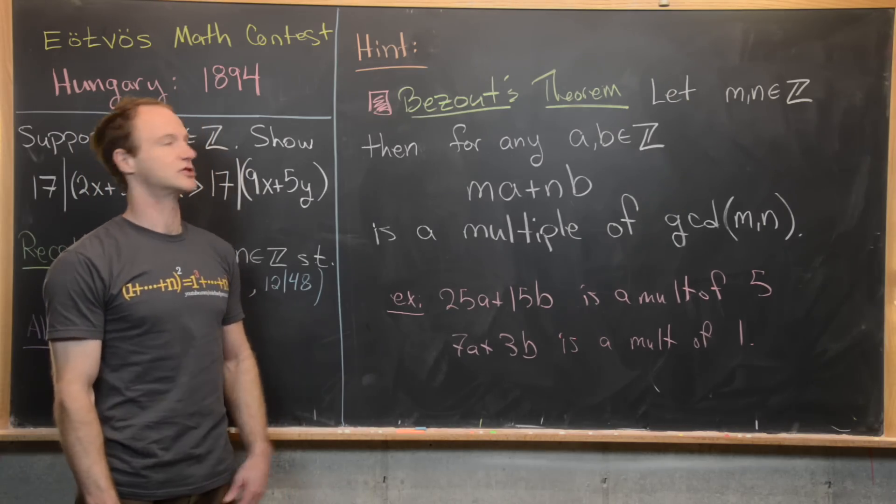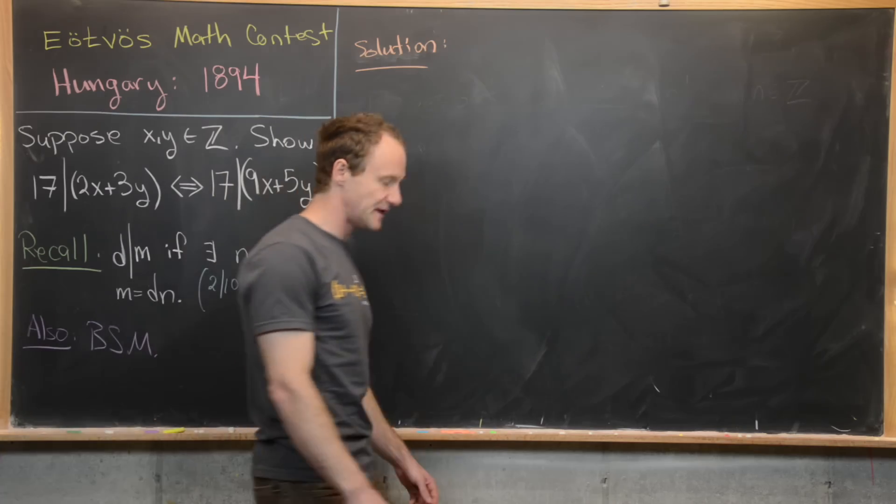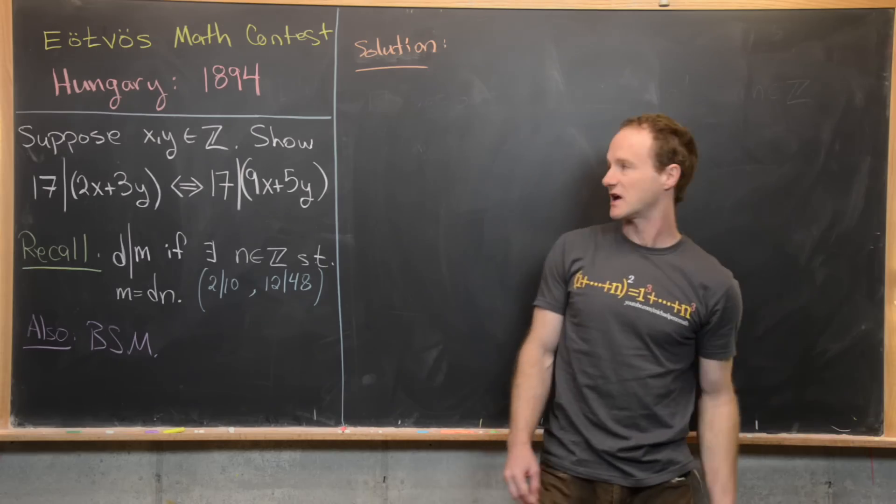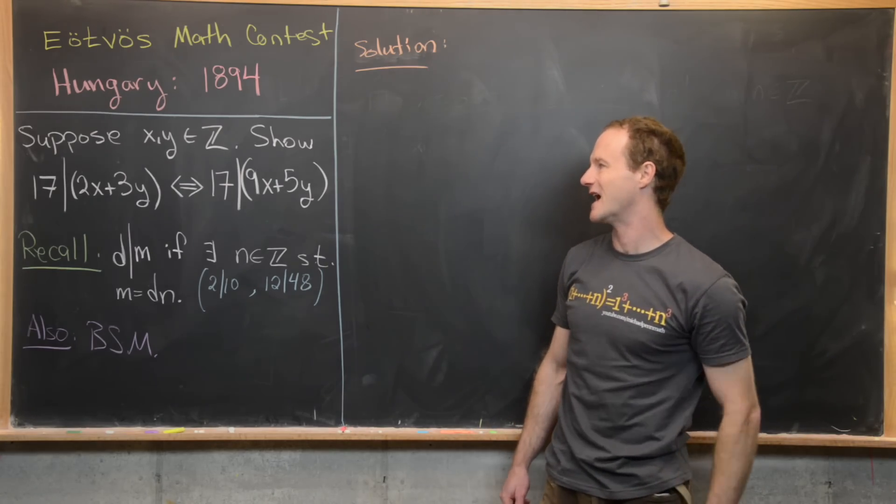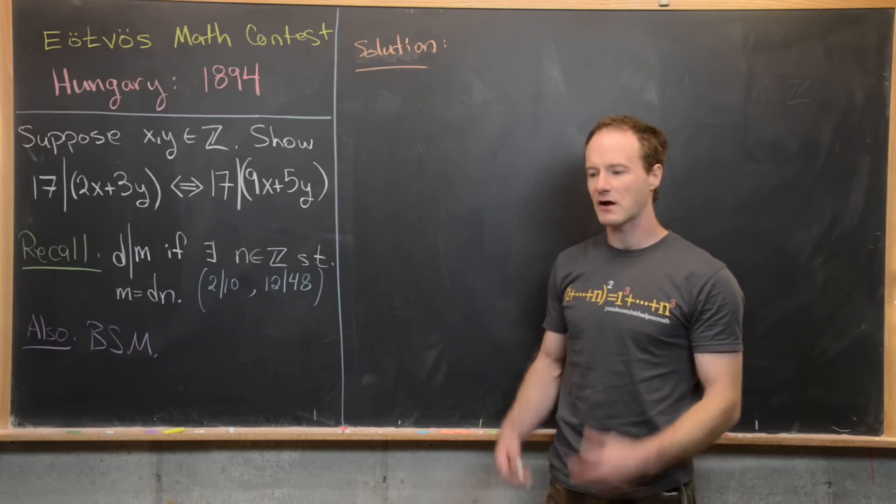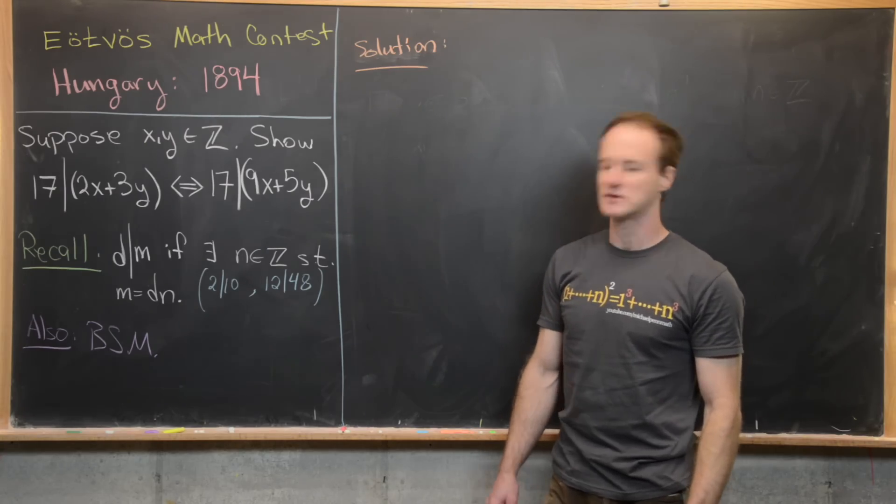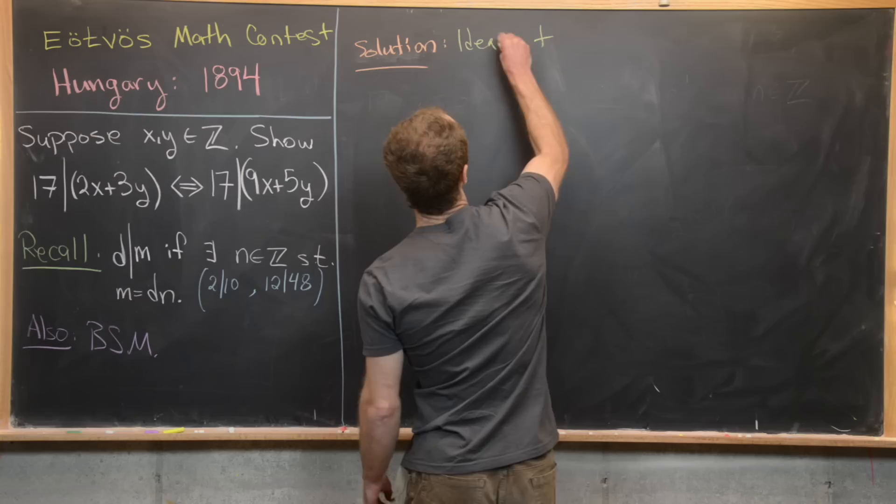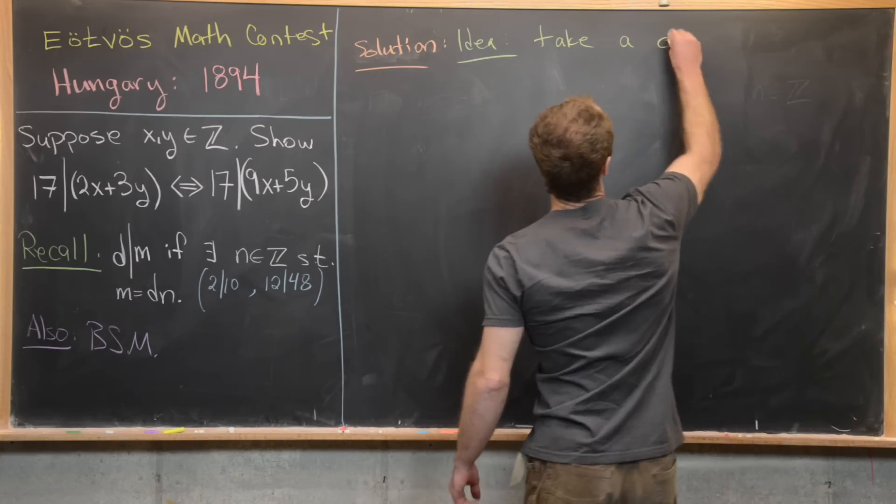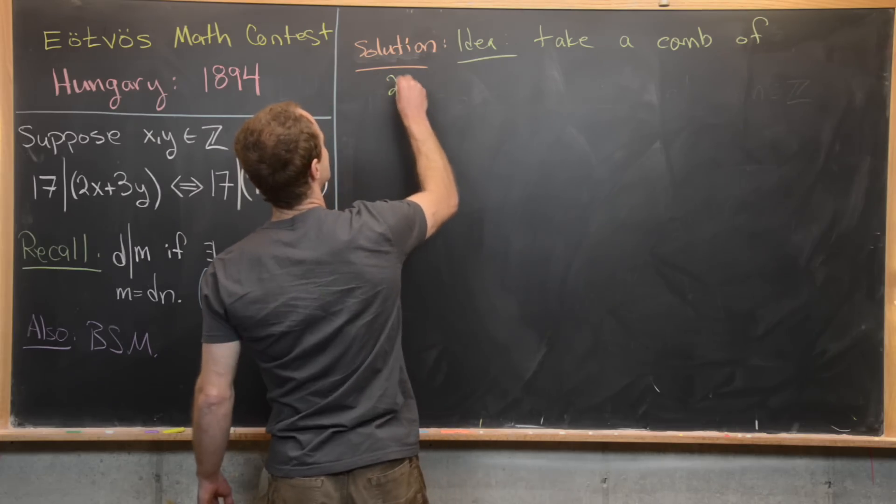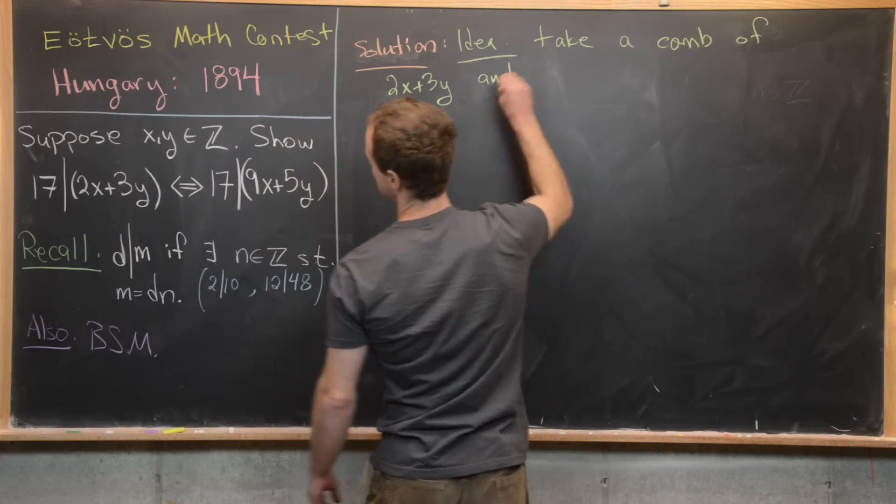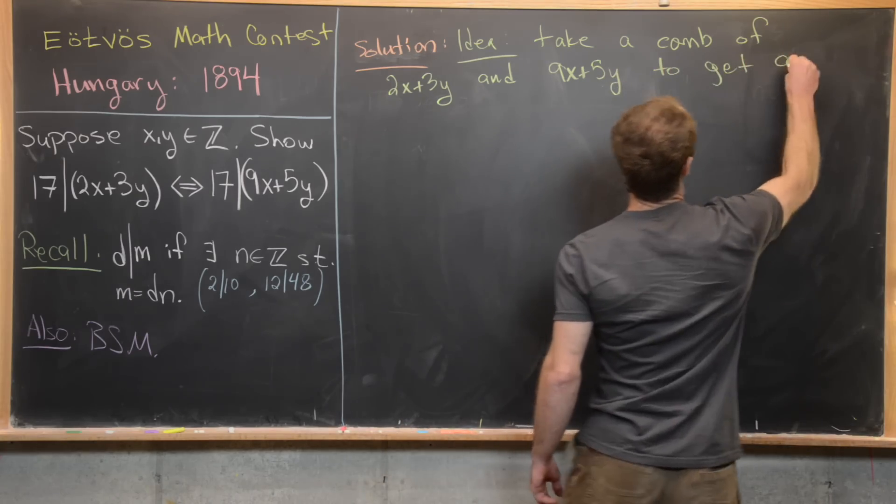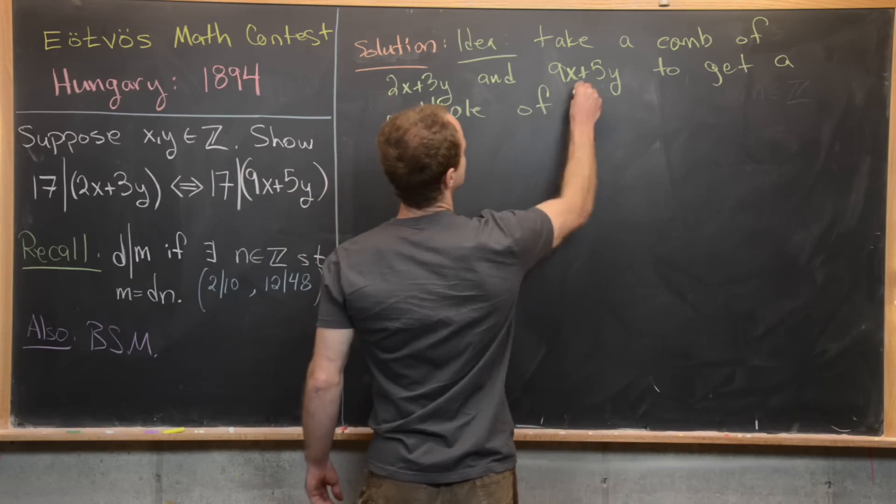Okay, so let's maybe clean this up and we'll look at the solution. So hopefully that hint was helpful. Now we're ready to look at a solution. So what I want to do is take these two goal objects, 2x plus 3y and 9x plus 5y. And I want to think about combining them in a way so that I get a multiple of 17. So let's maybe write that down as the idea.